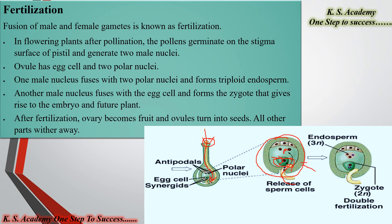Double fertilization occurs because two separate fusion events take place. The zygote gives rise to the embryo and the future plant. After fertilization, the ovary becomes a fruit and the ovule turns into a seed. The other parts are reformed when we grow the seed in soil. In this way, sexual reproduction takes place in a flowering plant. The main important point is that in flowering plants, one sperm fertilizes the egg cell, whereas another sperm fuses with the two polar nuclei to form the endosperm — this is known as double fertilization.